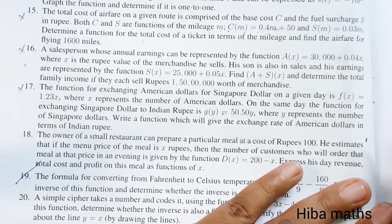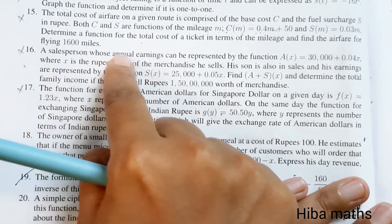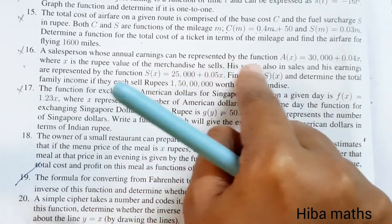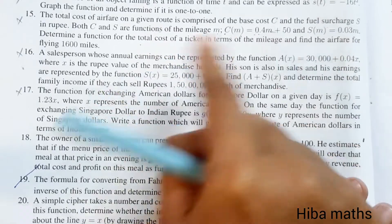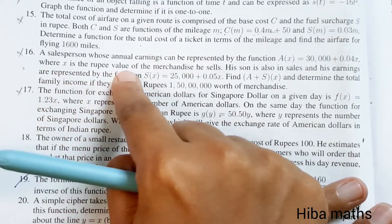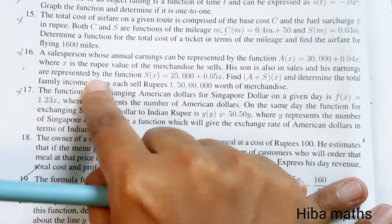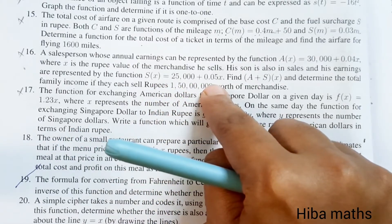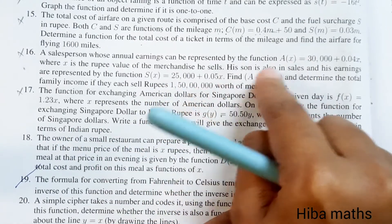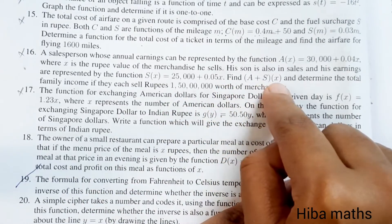Hello students, welcome to HIPAA Max 11 Standard, Chapter 1, exercise 1.3, question 16. A salesperson whose annual earnings can be represented by a function A(x) = 30,000 + 0.04x, where x is the rupee value of merchandise he sells. His son is also in sales and his earnings are represented by the function S(x) = 25,000 + 0.05x. We have the two functions A(x) and S(x), and we need to find A plus S of x.